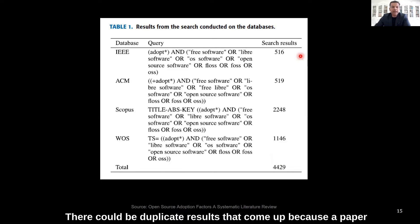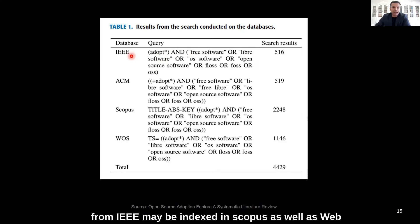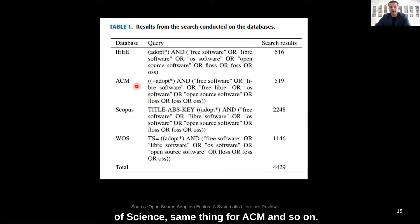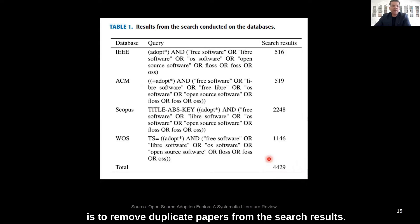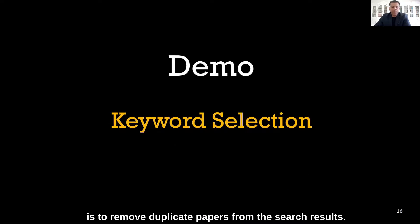In this case the results were 516, 19, and so on, totaling around 4,400 results — quite a lot. There could be duplicate results because a paper from IEEE may be indexed in Scopus as well as Web of Science, and the same for ACM. So one of the things you need to do is remove duplicate papers from the search results.